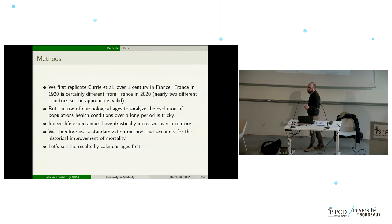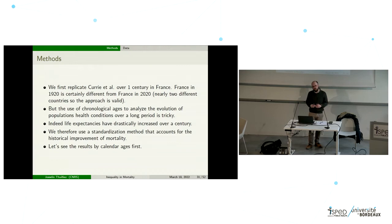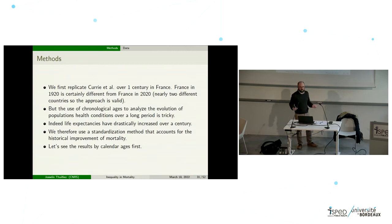The use of chronological age here may be problematic because life expectancy has increased a lot over the period. But it is relevant to make this analysis because comparing France in 1920 to France in 2020 is like comparing two different countries, given the changes observed over this time period. We will therefore use a kind of age standardization to take into account this life expectancy increase.